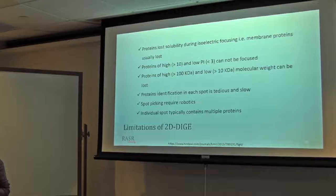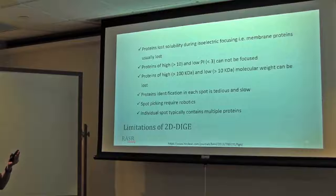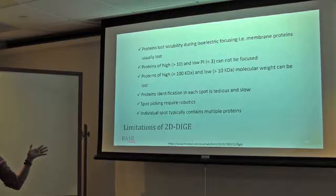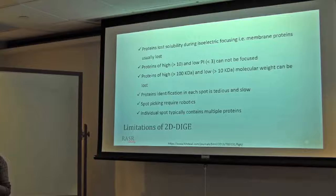Protein identification in each spot is a pretty slow process because you have to pick them, you have to cleave them by using proteolytic enzyme, then place them into LC for separation and into mass spec. Also, spot picking can be very challenging because it is a fluorescent gel which you cannot see by eye. So you have to work under the scanner or use a robot where it automatically sets the position and can pick spots.